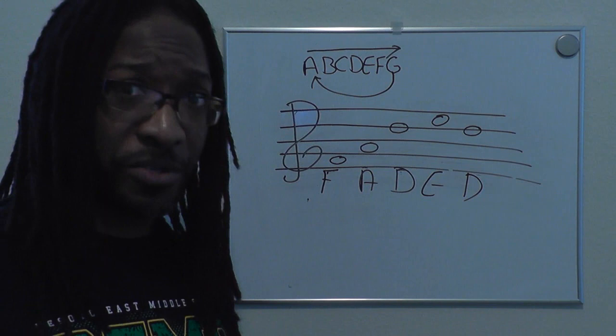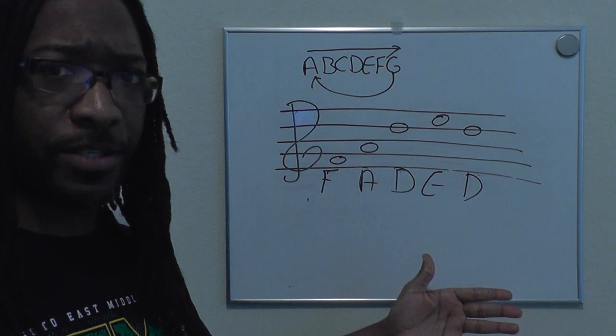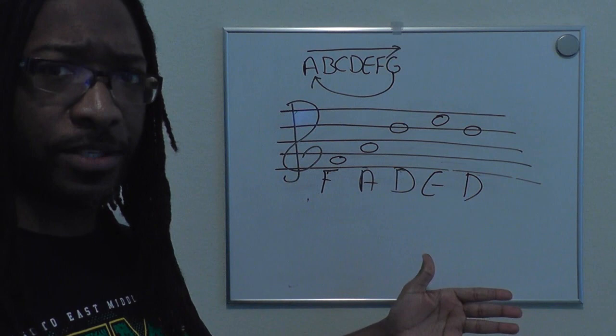As you learn them you'll get faster and faster and won't really need the shortcuts anymore. That is basically it — these are the lines and spaces of the staff. You'll have an assignment with different words to identify the same way I just showed you. If you have any questions, please send me an email or message me in Google Classroom. Have a good one!